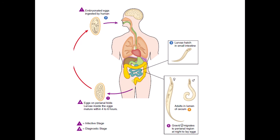Severe anal itching is associated with these roundworms. Because these worms look like a pin, we call them pinworms. The main clinical manifestation is severe anal itching, especially at night when the females exit the anal orifice to lay eggs in the perianal region, causing severe anal itching, infection, and bleeding associated with the anal ulceration.